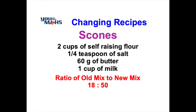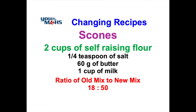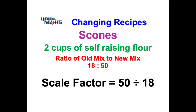Let's look in particular at the number of cups of self-raising flour and think about how many cups we'd use if we're producing 50 scones. You'd think that 18 goes into 50 two and a bit times, so maybe we've got to multiply the number of cups by two and a bit. So let's have a look at how we work it out accurately. We use a scale factor where it's the new number of scones divided by the old number of scones — and the same applies if we're talking about people: the new number of people divided by the old number of people.